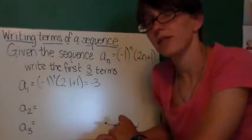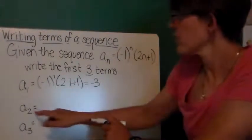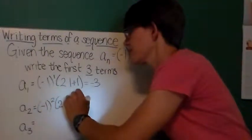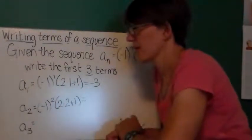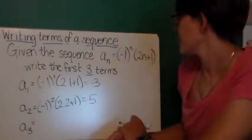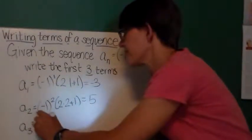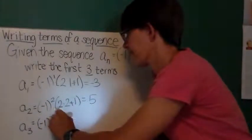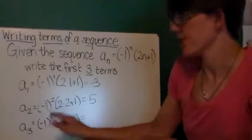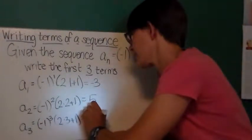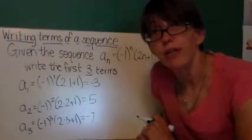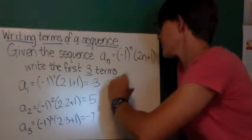Then I'm going to evaluate the second term in the sequence. I'll replace this n here and here with two. So I have negative one squared, two times two plus one. So negative one squared is positive one, and this is five, so positive five. Okay, I'll evaluate the third term, replacing n with three. Negative one to the third power is going to be negative, and this is going to be seven, so I'll get negative seven. Hopefully you can see a pattern evolving. What do you think a sub four would be? How about a sub five?